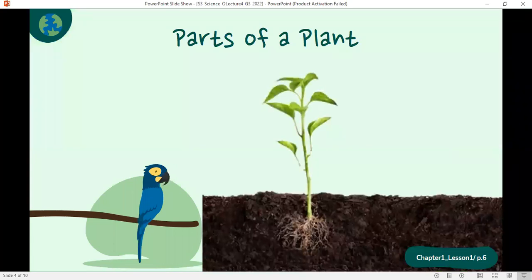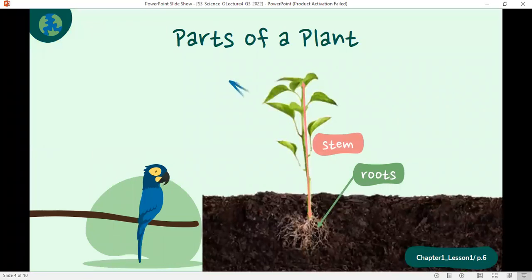Plants show three main parts. The part hidden in the soil is called the roots. And this one, this line supporting the plant is its stem. And these green parts are the leaves.